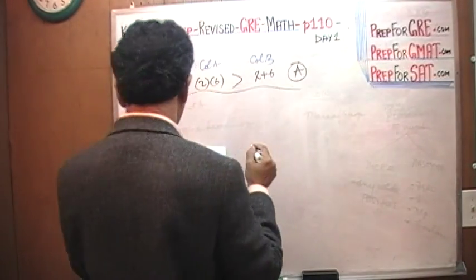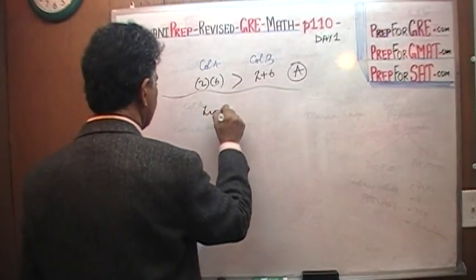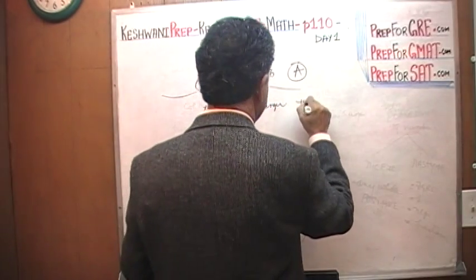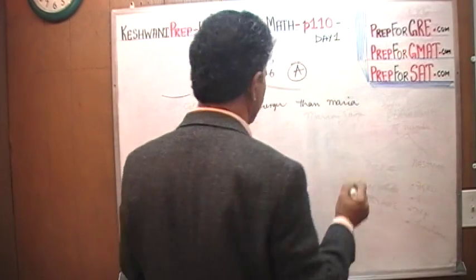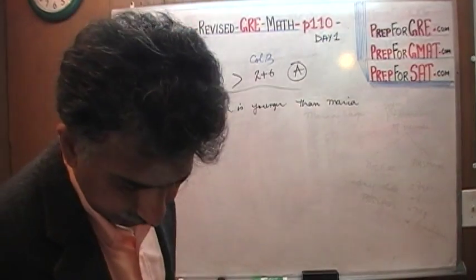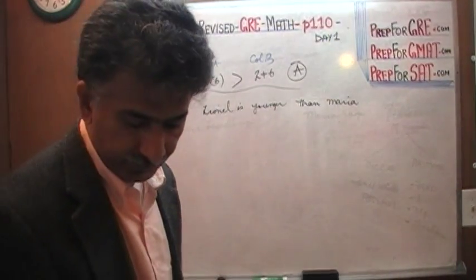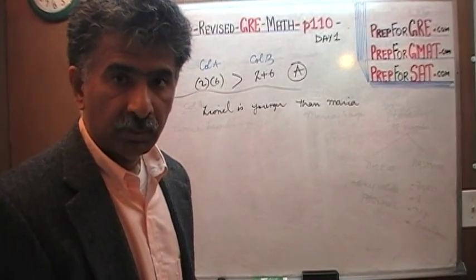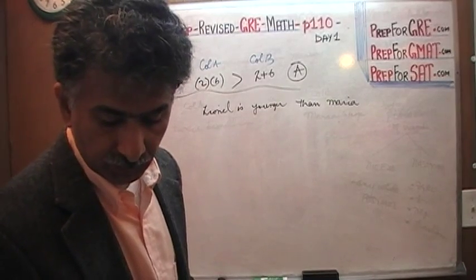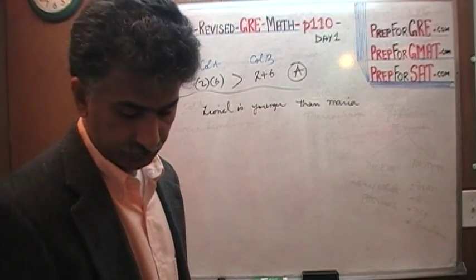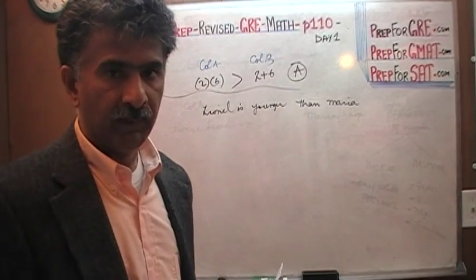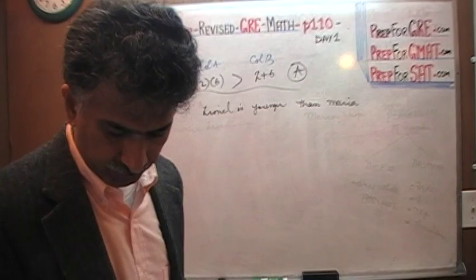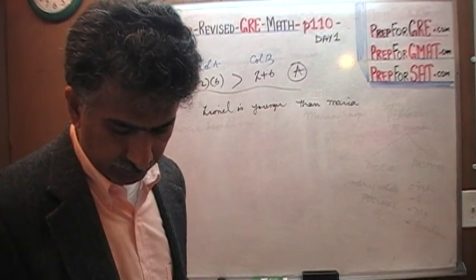Second problem: they tell us that Lionel is younger than Maria. It is vital that you have this book in front of you so you can follow the work. Don't depend on my writing the entire problem on the blackboard. This is straightforward.